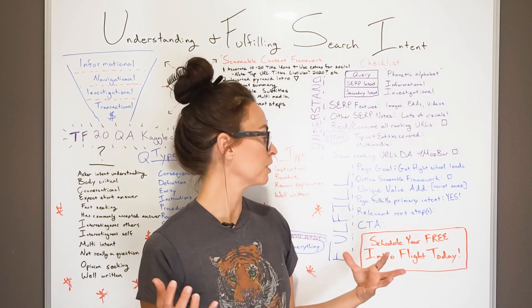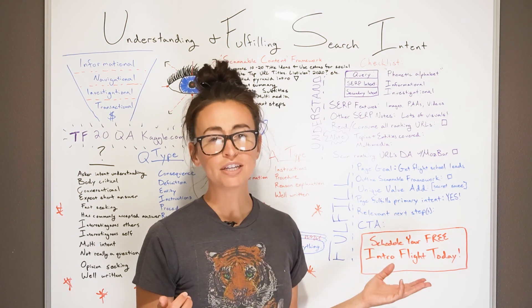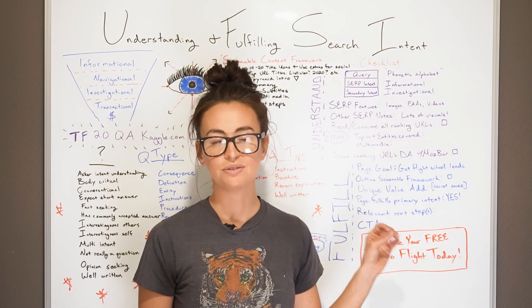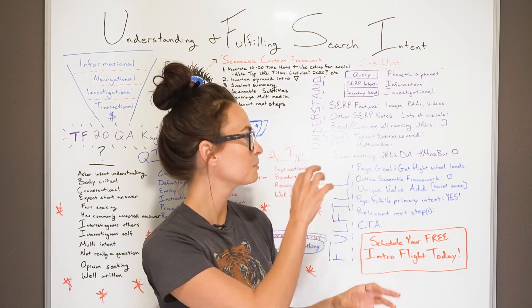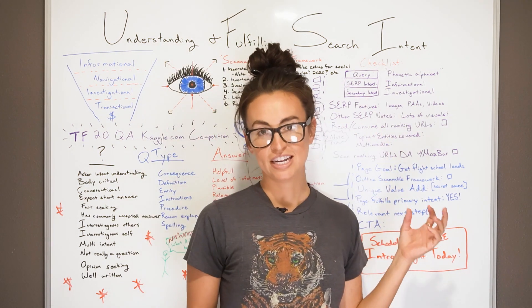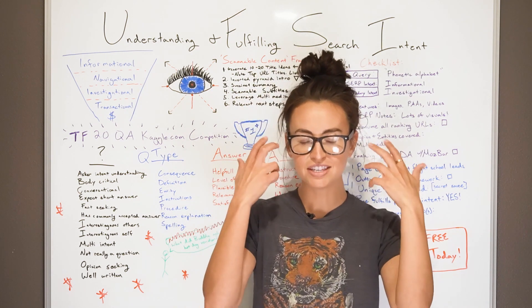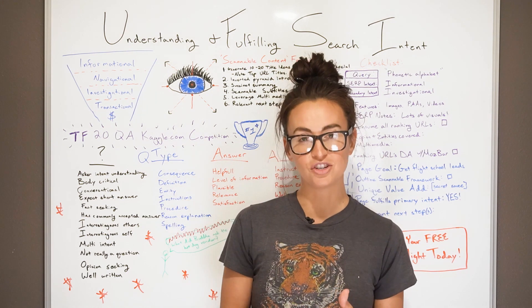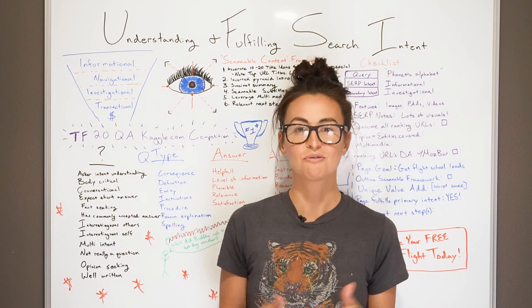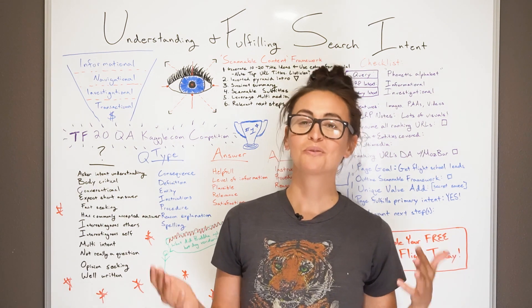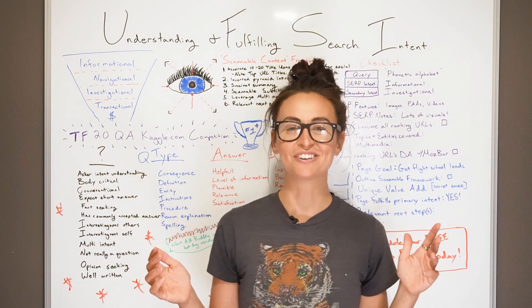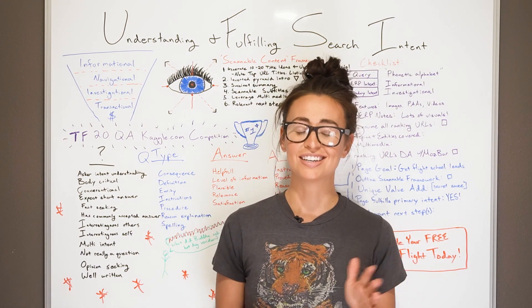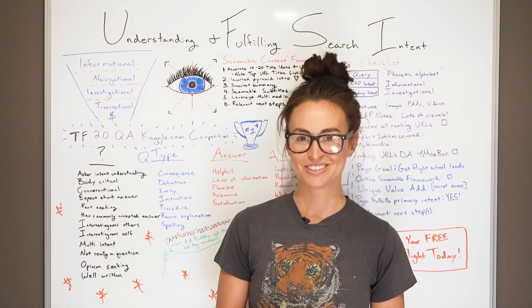Put yourself in the mindset of the user and really try to cultivate logical next steps for someone to go through on your site, really building out that supportive content. And lastly, make sure you have a CTA, and hopefully it's to fulfill the page goal you set for yourself. This should become second nature after a couple of passes, where you just have these mental checks in your head and you can quickly evaluate search result pages to target, rank, and succeed in search. Looking forward to hearing your thoughts and comments below — thank you so much for joining me on this edition of Whiteboard Friday. I'll see you all soon!